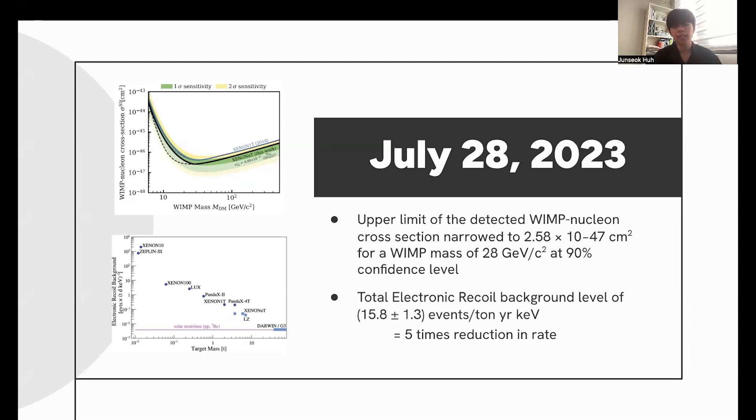The upper limit of the detected WIMP nucleon cross-section was narrowed to 2.58 times 10 to the negative 47 square centimeters for a WIMP mass of 28 giga electron volts per C squared at 90% confidence level.